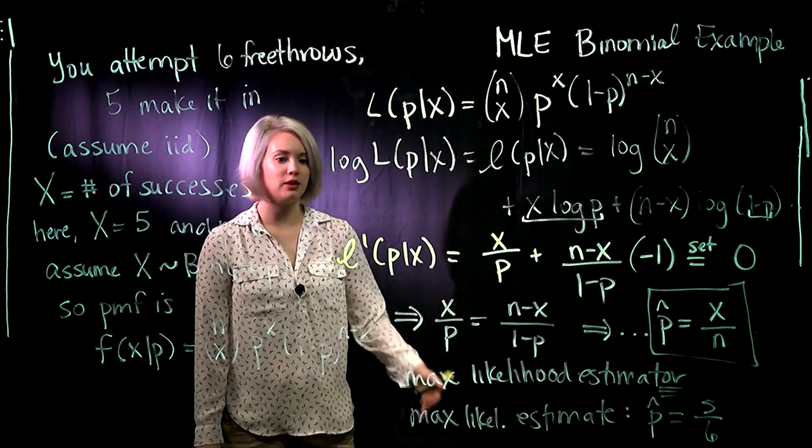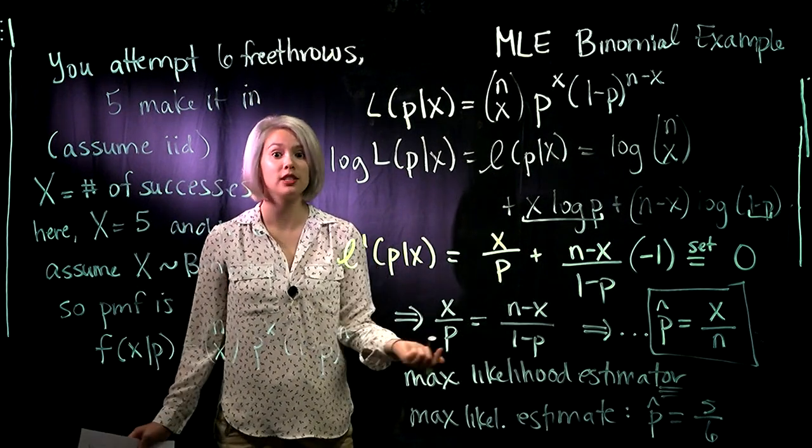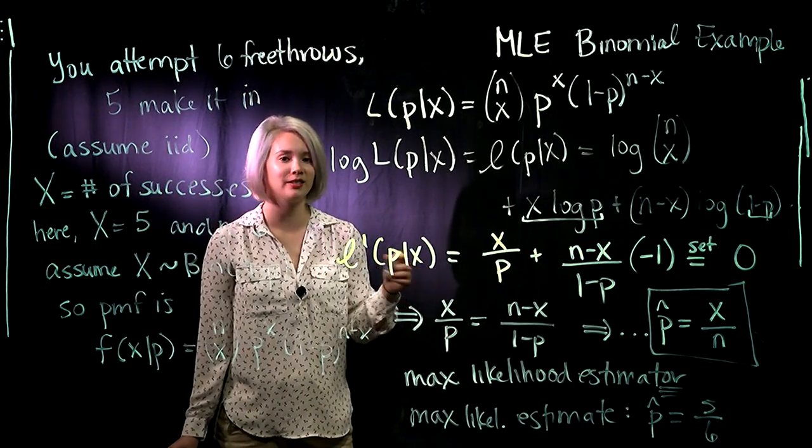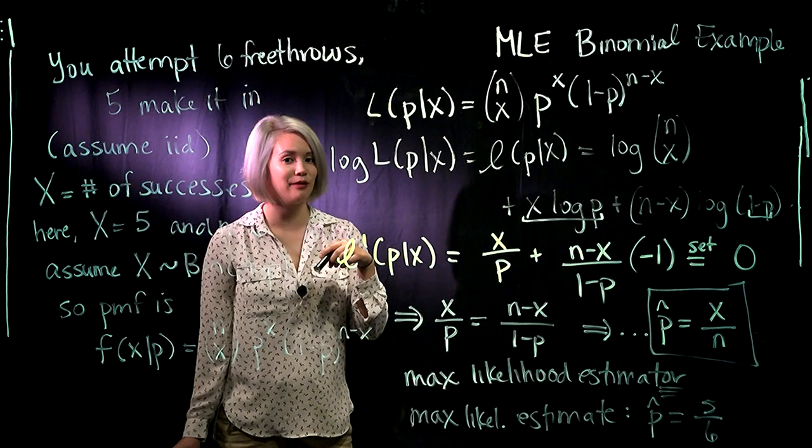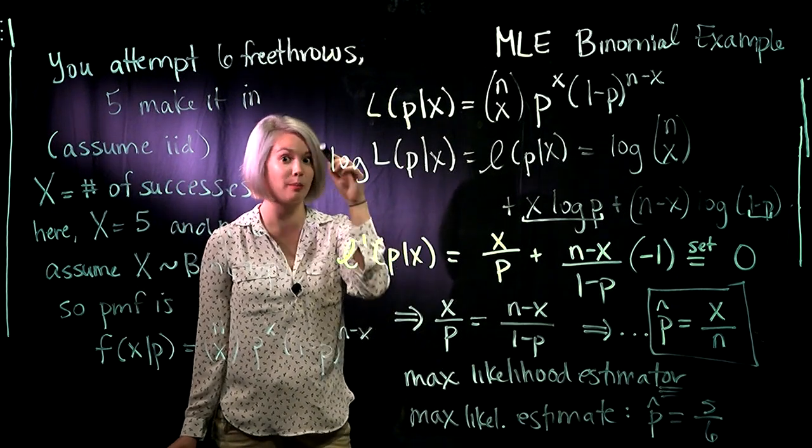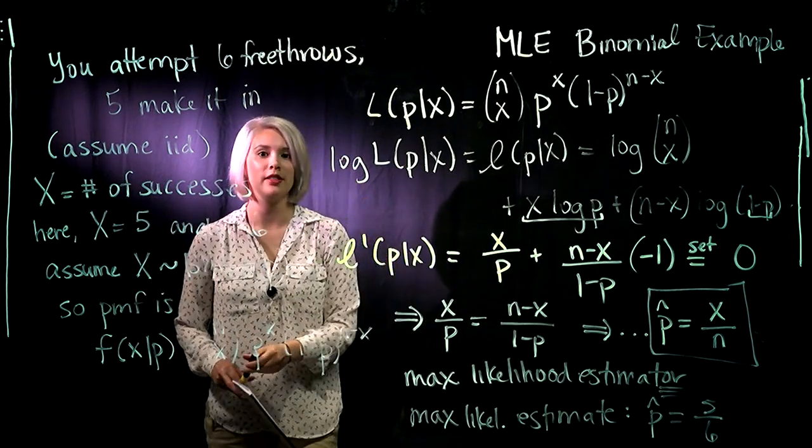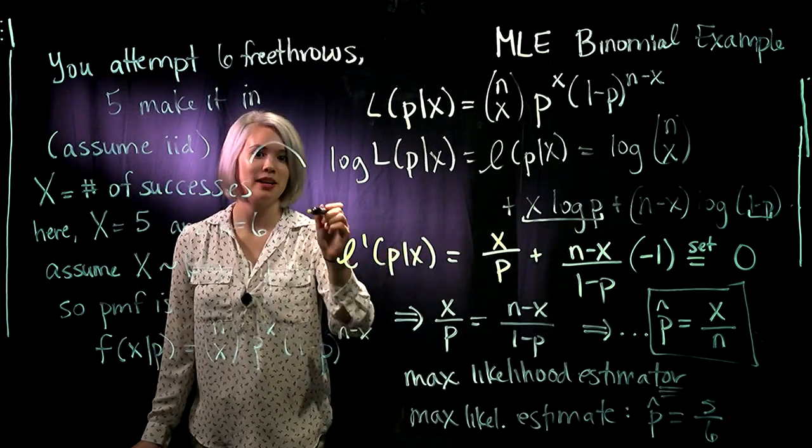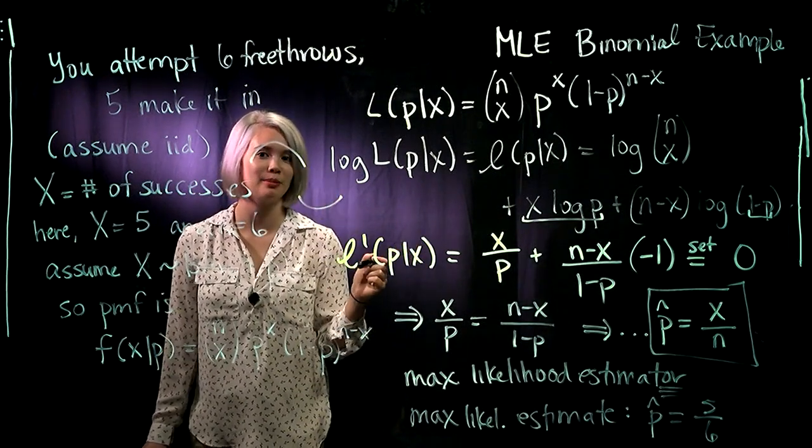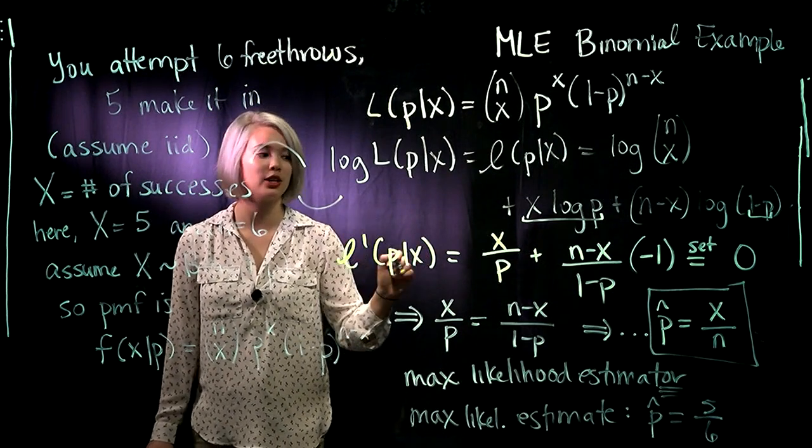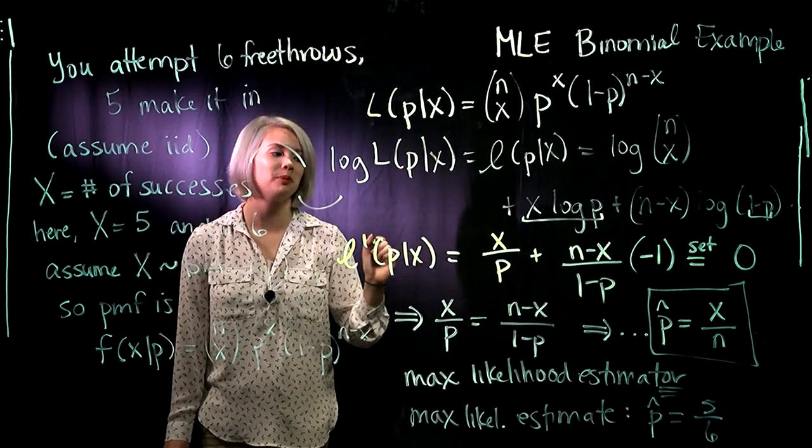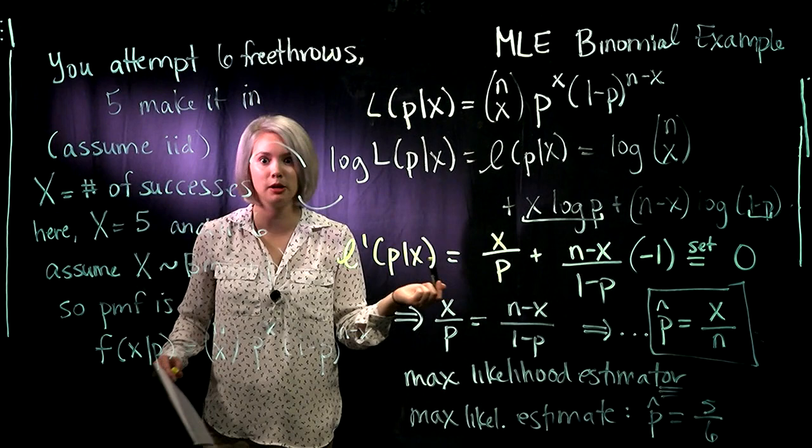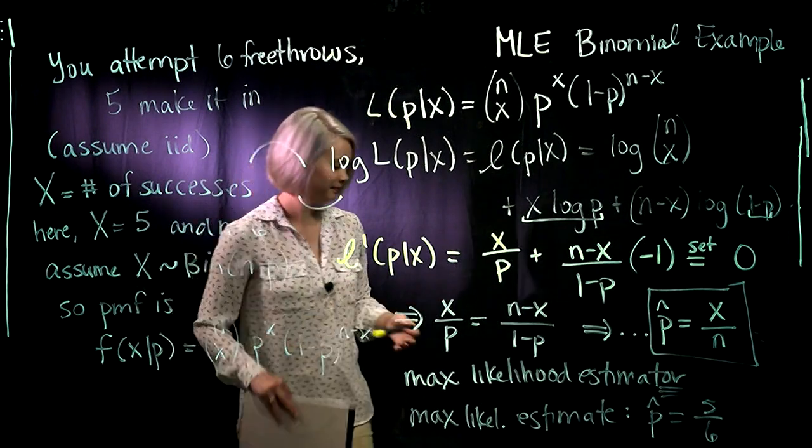And of course last step would be to take the second derivative because we do want to check that our likelihood is concave down here rather than concave up. We're looking for the maximizer so we need it to be concave down rather than the minimizer which would be concave up. So take that second derivative and make sure that you actually have a maximum likelihood estimator and not a minimum likelihood estimator.